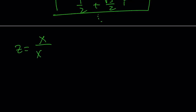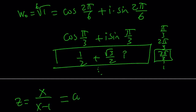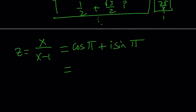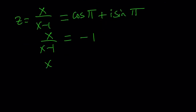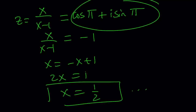If z equals x over x minus 1, one of the 6 roots of unity is at angle pi — cosine pi plus i sine pi. Cosine pi is negative 1 and sine pi is 0, so this is just negative 1. If x over x minus 1 equals negative 1, let's solve for x: x equals negative x plus 1, then 2x equals 1, so x equals 1/2. From this root of unity we get the real solution. The other roots of unity are going to give you the complex solutions.